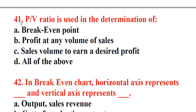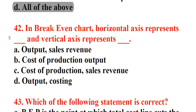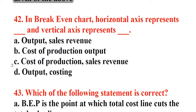Question 41: PV ratio is used in the determination of. A. Breakeven point, B. Profit at any volume of sales, C. Sales volume to earn a desired profit, D. All of the above. Answer: D. All of the above. Question 42: In breakeven chart, horizontal axis represents underscore and vertical axis represents underscore. A. Output, Sales revenue, B. Cost of production output, C. Cost of production, sales revenue, D. Output, costing. Answer: A. Output, sales revenue.